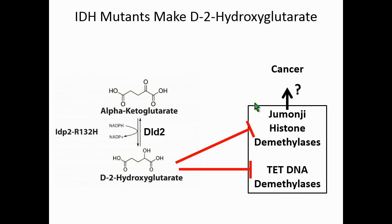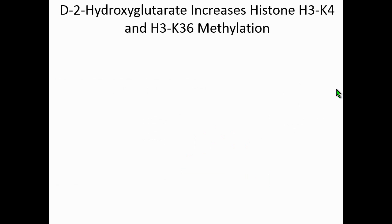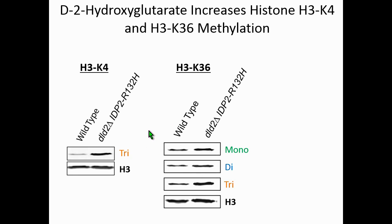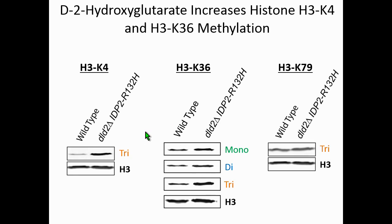The next thing I wanted to figure out is what are the relevant targets of accumulating D2-hydroxyglutarate causing this effect on silencing. We know from the cancer literature that accumulation of this metabolite can inhibit demethylases, so I looked there first. In yeast, since there are no DNA demethylases, I wanted to know whether histone demethylation was being inhibited. Looking at bulk histone methylation levels, in mutants that accumulate D2-hydroxyglutarate, H3K4 methylmarks increase and H3K36 methylation increases, but H3K79 does not increase—which makes sense because there are known demethylases acting on H3K4 and H3K36, but no known demethylase acting on H3K79 in yeast.